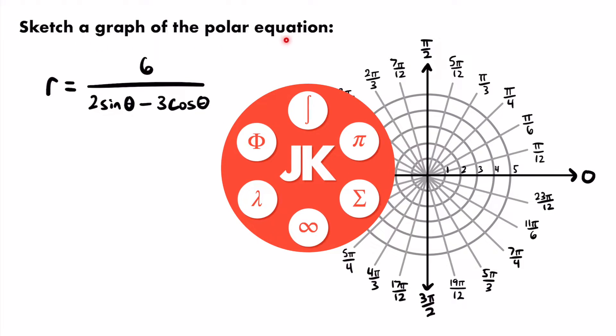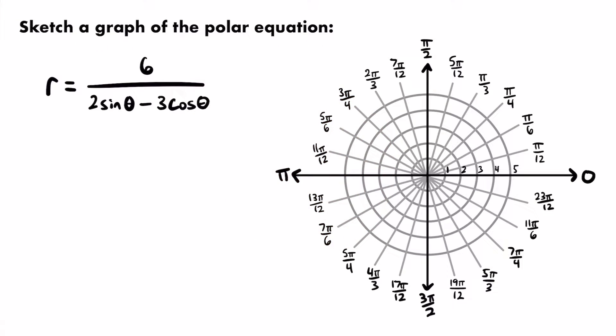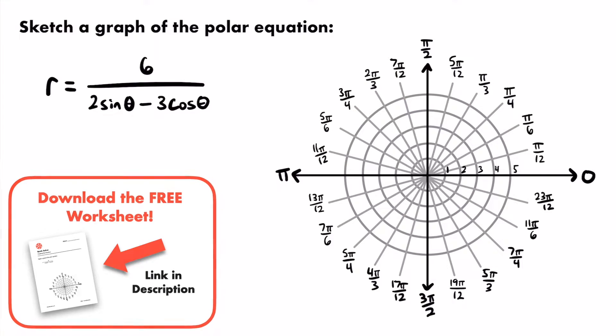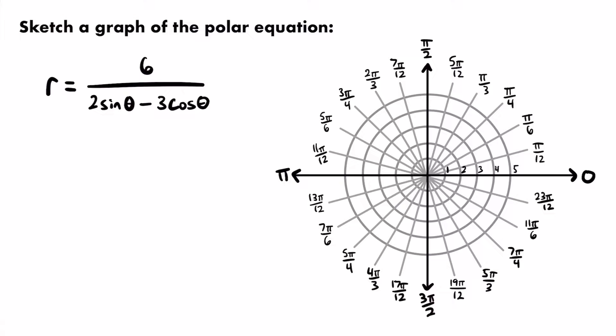Here we want to sketch a graph of the polar equation r equals 6 divided by 2 sine theta minus 3 cosine theta. Over here I have a polar coordinate system that we can use to sketch the graph. At first glance, when looking at this polar equation, it doesn't seem to be in the form of any special polar graphs that we know — it doesn't look like a circle, a limaçon, or anything else we can easily recognize.